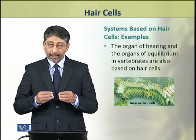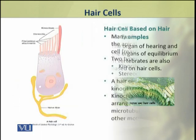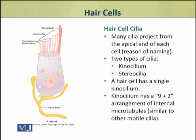The organ of equilibrium in vertebrates is also based on hair cells. Now we shall discuss the cilia of hair cells, which are the major components involved in sensory transduction. Many cilia project from the apical end of each cell — yehi wajah hai ke in cells ko hair cells ka naam diya jata hai, ke cilia jo hai woh hair ki tarah se apical surface se emerge ho rahi hoti hai. There are two types of cilia: the kinocilium and the stereocilia.